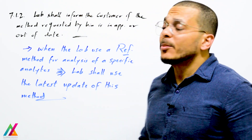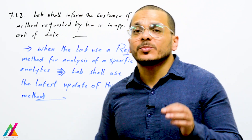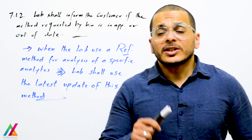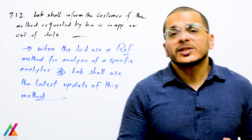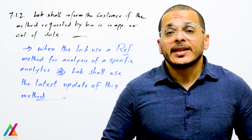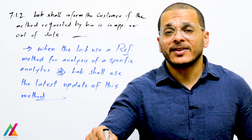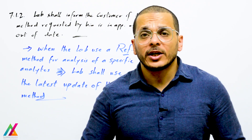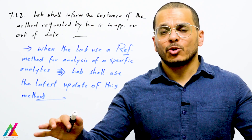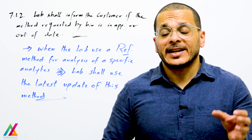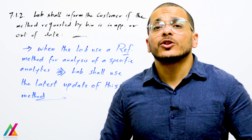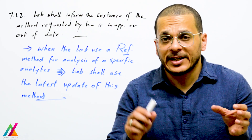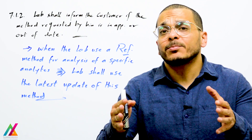If the lab for unforeseen reasons cannot use the latest update of a method, the lab shall confirm whether the method used is still valid and whether valid results can be obtained without transferring to the updated version. In this case, the lab shall compare both methods by replicate analysis of samples with known concentrations of target analytes, or better, by replicate analysis of certified reference materials using both the old and the updated method.